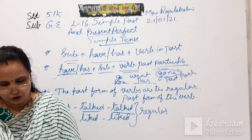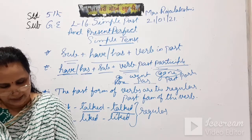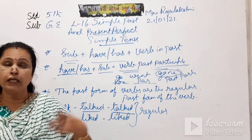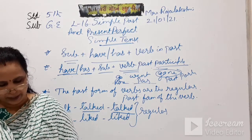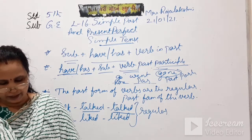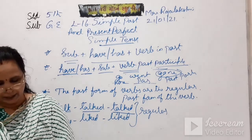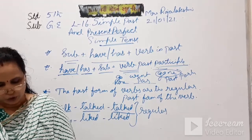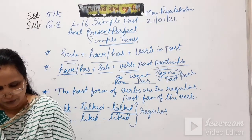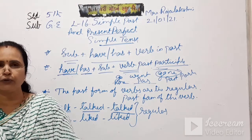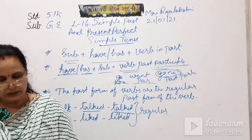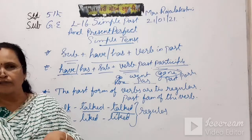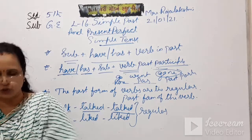Regular verb examples: agree, agreed, agreed; enjoy, enjoyed, enjoyed; mix, mixed, mixed; travel, traveled, traveled. For irregular verbs, the past participle form is different from the past form. For example: be — was — been; begin — began — begun; choose — chose — chosen; forgive — forgave — forgiven; go — went — gone; drink — drank — drunk. Irregular verbs ka past participle change ho jata hai.